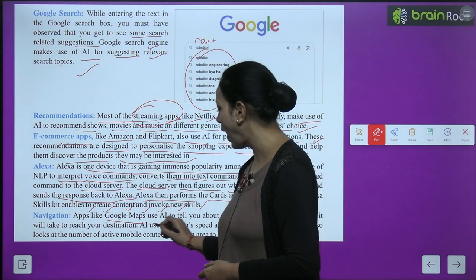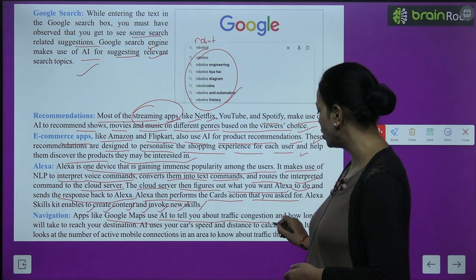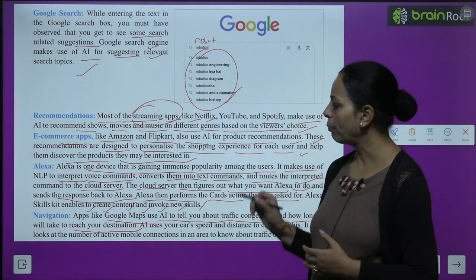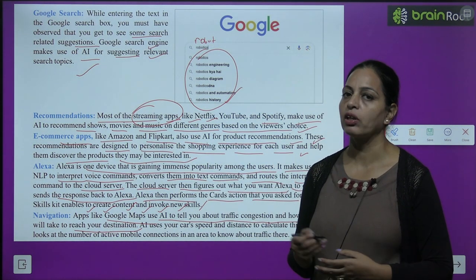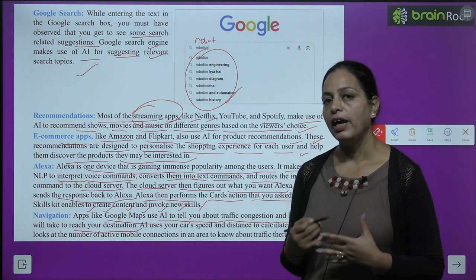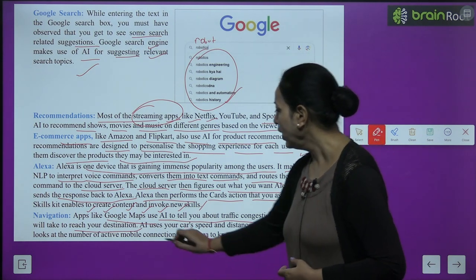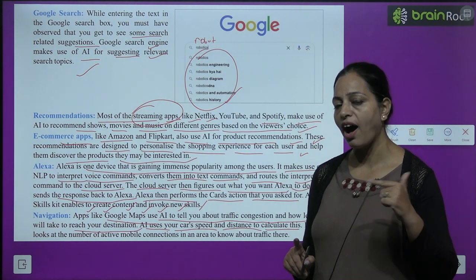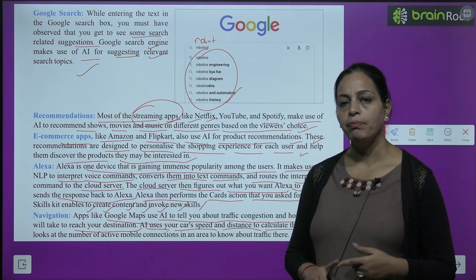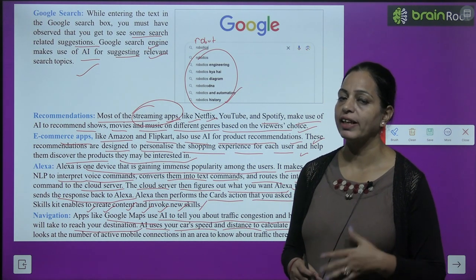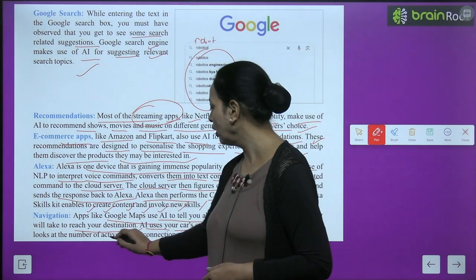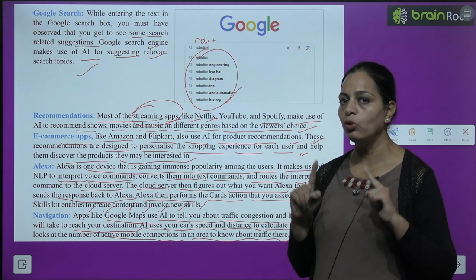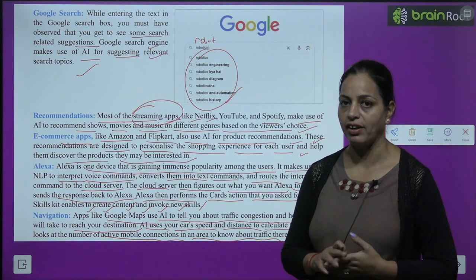Navigation apps like Google Maps use AI to tell you about traffic congestion and how long it will take to reach your destination. AI uses your car's speed and distance to calculate this. It also looks at the number of active mobile connections in an area to estimate traffic — us area mein jitne bhi mobile use ho rahe honge, uske according estimate kar deta hai kitna traffic hai.